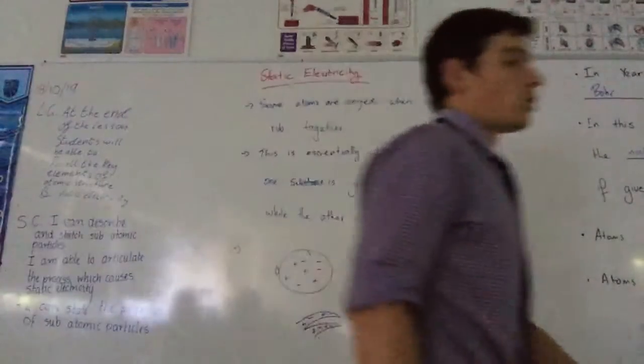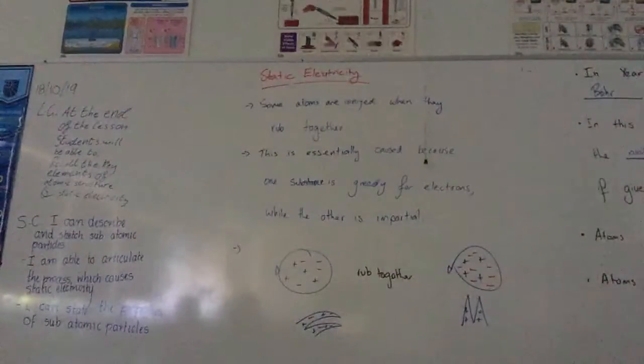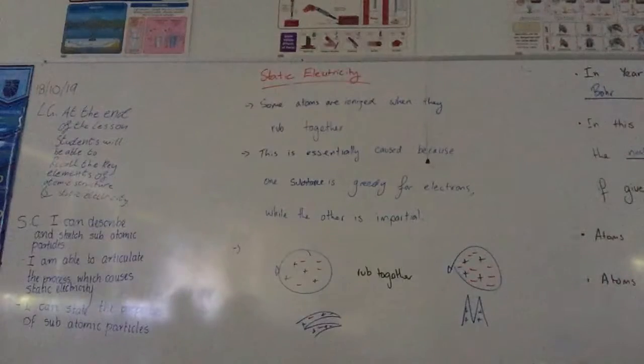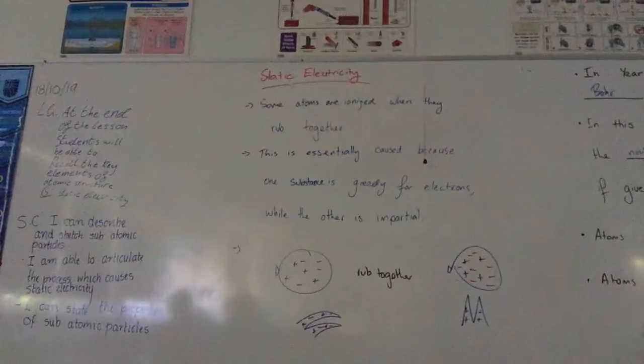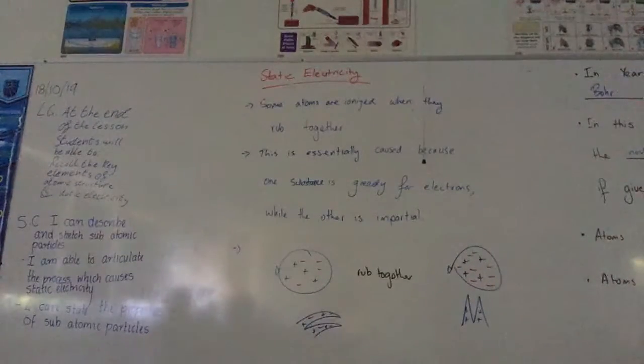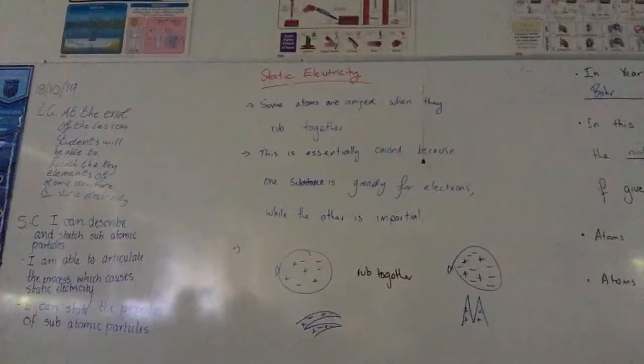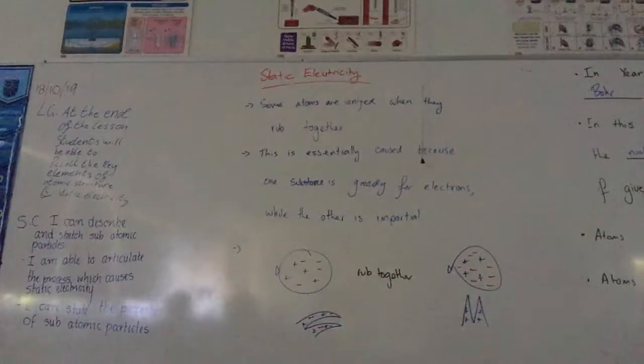Some atoms are ionized when they rub together. We can either provide energy or rub some atoms together to make them ionized. What does ionized mean? They either gain or lose electrons.